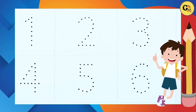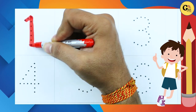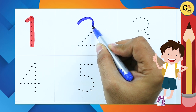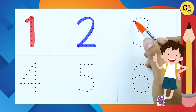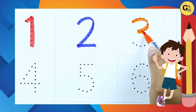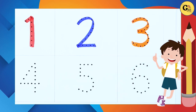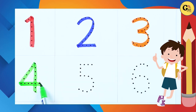Let's start — how to write numbers 1 to 10. It's number 1 with red color. Number 2 with blue color. It's number 3 with orange color. It's number 4 with green color.